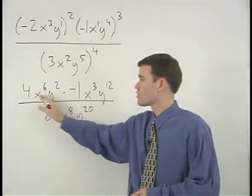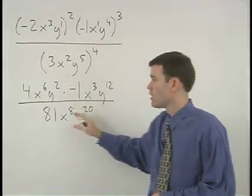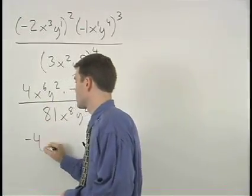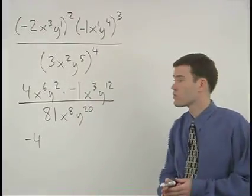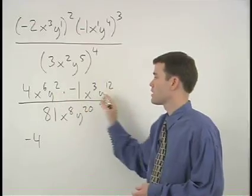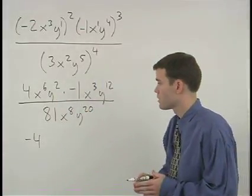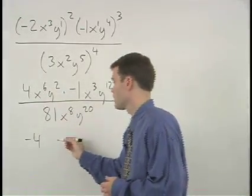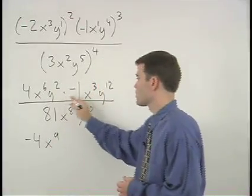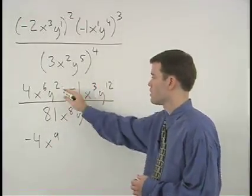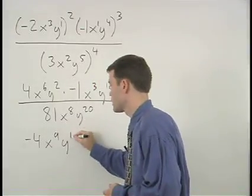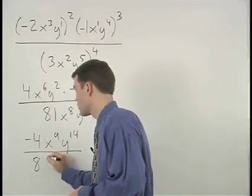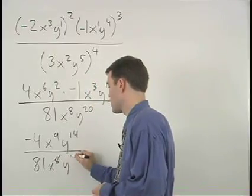Next, we apply our product rule across the numerator. Multiplying the two coefficients, we get negative 4. Remember that the product rule states that when multiplying powers that have the same base, we add their exponents. So we have x to the 6th times x to the third, which is x to the 9th. Y squared times y to the 12th is y to the 2 plus 12, or y to the 14th. So we have negative 4x to the 9th, y to the 14th over 81, x to the 8th, y to the 20th.